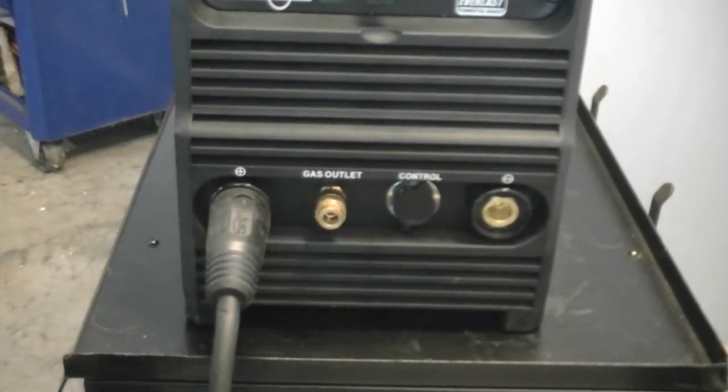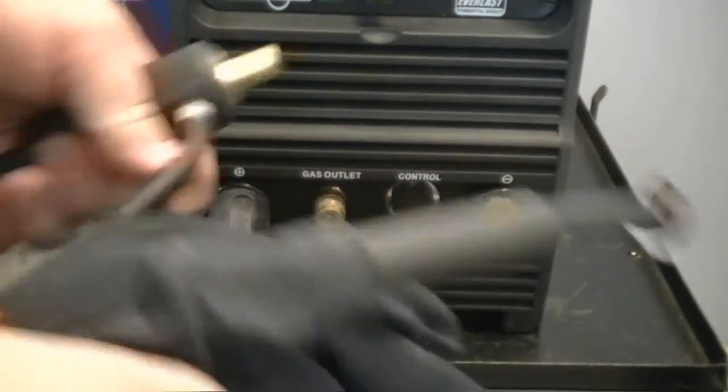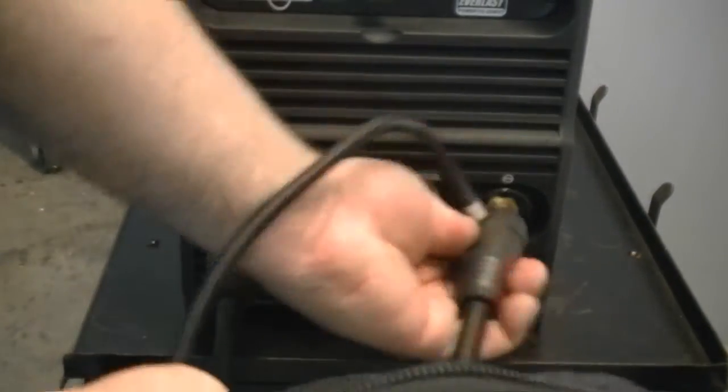To install the air-cooled 9 series TIG torch, install the main connector into the negative side which is on the right. Notice the single piece design of the torch.